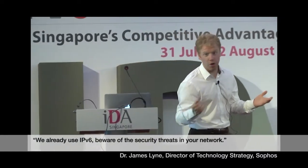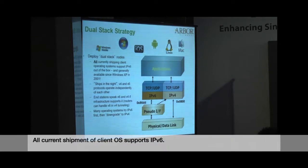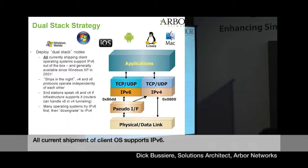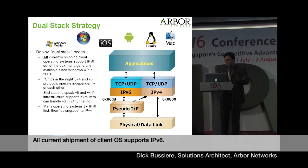Lots of traditional security controls struggle with dealing with IPv6, but our networks just allow it all to happen. Dual stack has been around for quite a while — it's been supported since Windows XP, though it wasn't on by default then. Every operating system shipping today supports dual stack technologies. Most operating systems shipping now try IPv6 first and then downgrade to IPv4, so chances are you've got IPv6 in your pocket right now. IPv4 and IPv6 generally operate independently of each other — ships in the night.